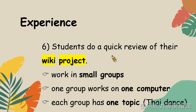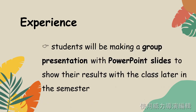Step 6: Students do a quick review of their wiki project. 那這裡講到的wiki project是前面老師要求學生分組做的維基百科專題報告。 在完成兩個影片的評論後,學生們被要求再次分組,每組共用一台電腦。 那這裡課本的舉例是每組挑選一種泰國舞蹈來做介紹。 Students will be making a group presentation with PowerPoint slides. 因為這份專題報告沒辦法在一堂課的時間內完成,所以學生們必須利用課餘時間完成這份專題,並且在之後上課使用PowerPoint來對全班報告他們的結果。 這兩份作業的形式有點類似,同樣都是每一組有不同的主題,且都必須要用PowerPoint,再給一堂課的時間向全班同學報告,每個組別的主題又都是從同一個大主題延伸出來的。